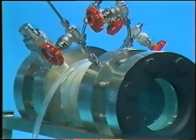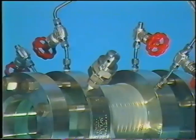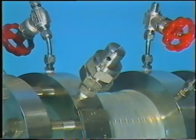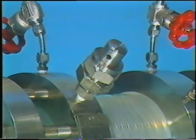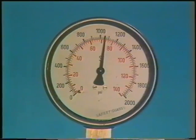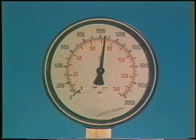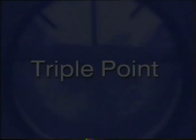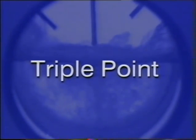Both phase changes will take place in an observation cell specially designed and constructed by Mesa UK. The cell can withstand pressures of more than 1,000 pounds per square inch gauge, equivalent to 69 bar gauge.